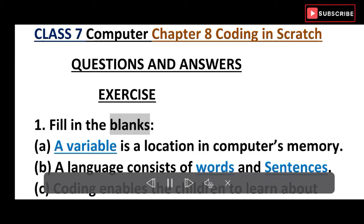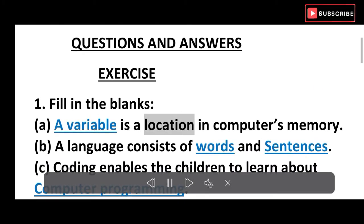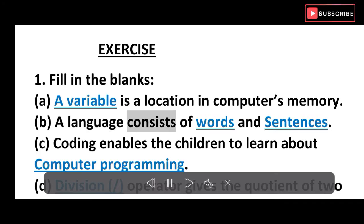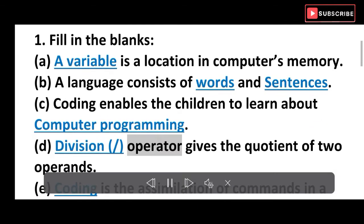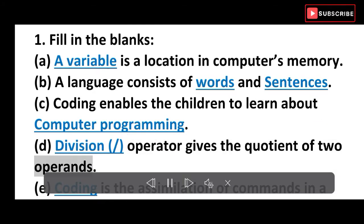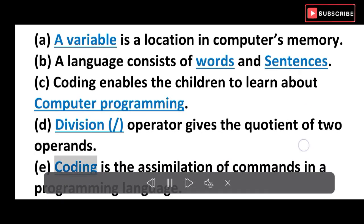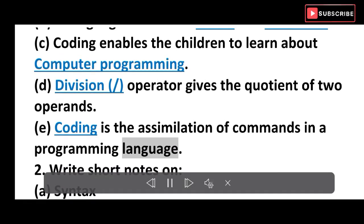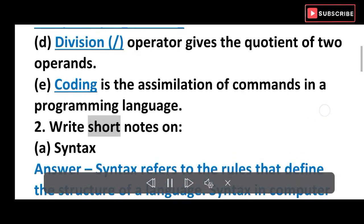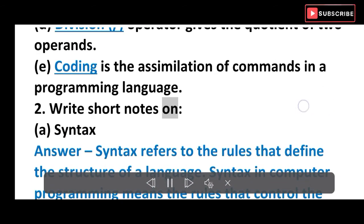A variable is a location in computer's memory. A language consists of words and sentences. Coding enables the children to learn about computer programming. Division operator gives the quotient of two operands. Coding is the assimilation of commands in a programming language. 2. Write short notes on: (a) Syntax.